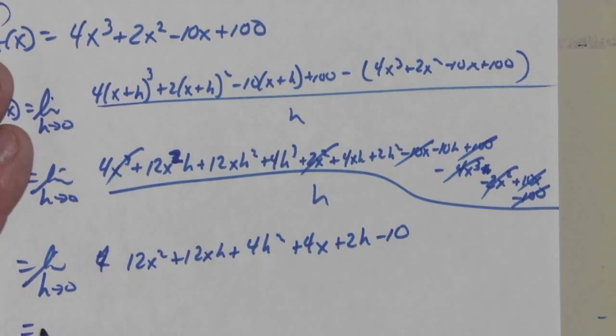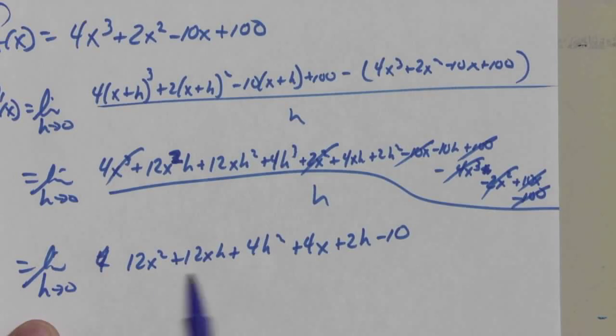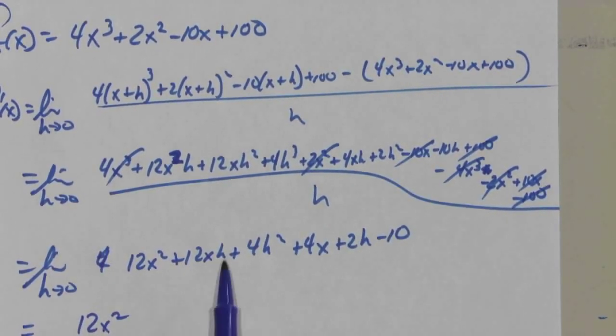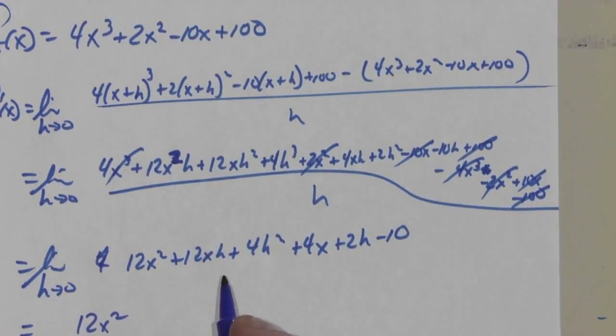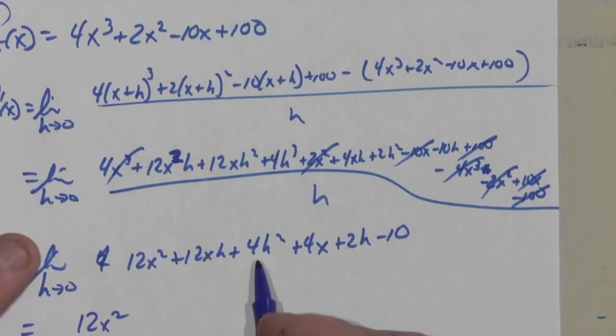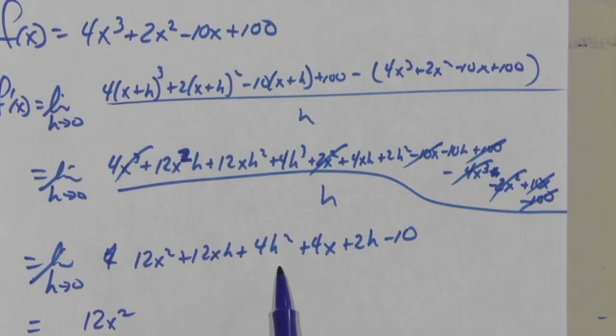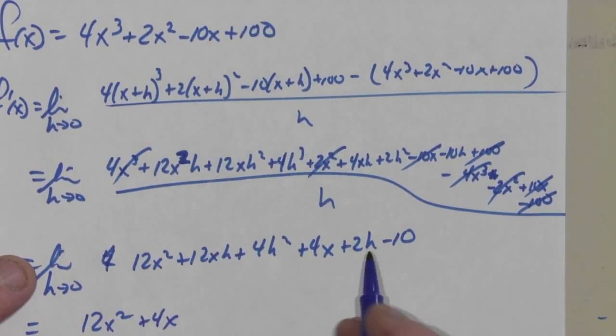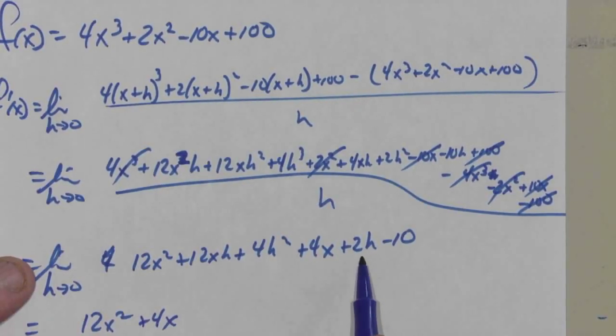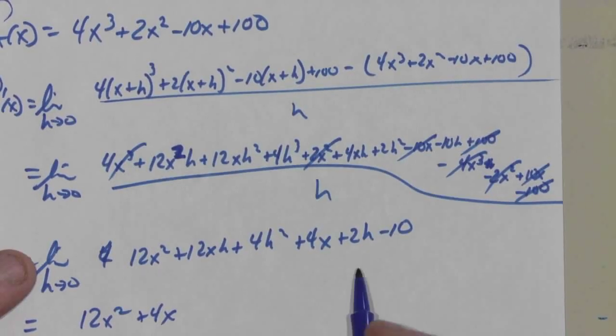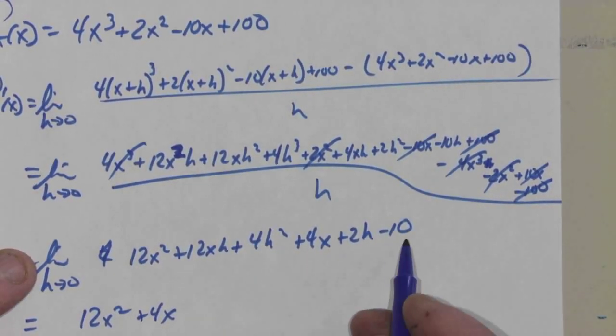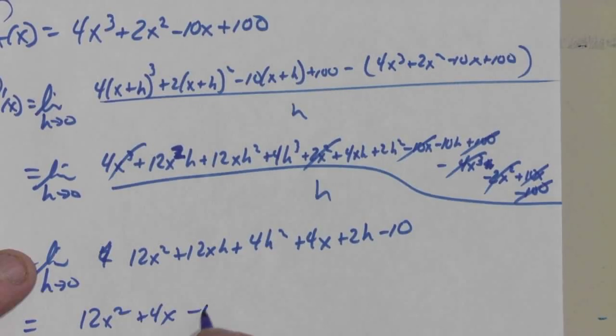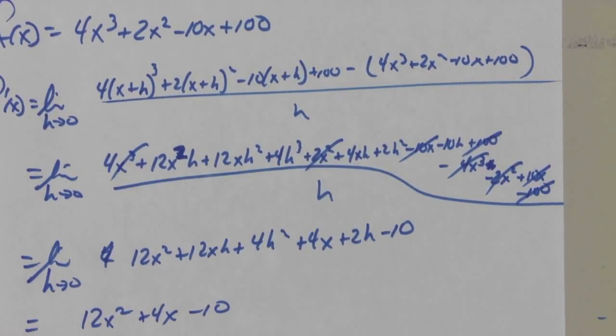Equals. Okay. Now as h gets closer to zero, that gets closer to 12x squared. What's this get closer to? No. It's nothing because h being zero wipes it out. This gets closer to nothing. What's this get closer to? 4x. What's this get closer to? Zero. And that gets closer to? Okay. So there's my derivative.